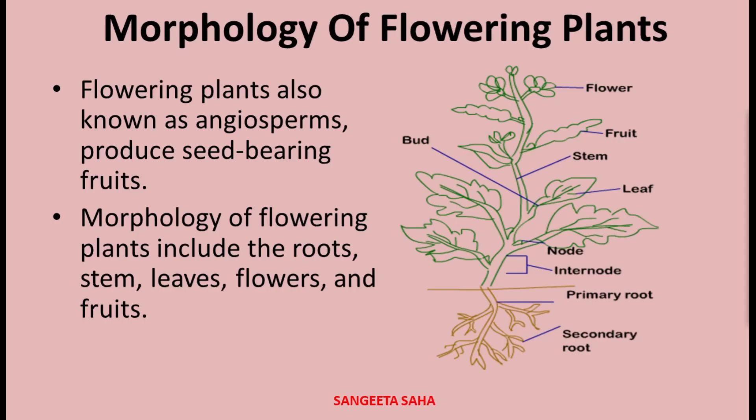Now flowering plants are characterized by the presence of root, stem, leaves, flowers and fruits.